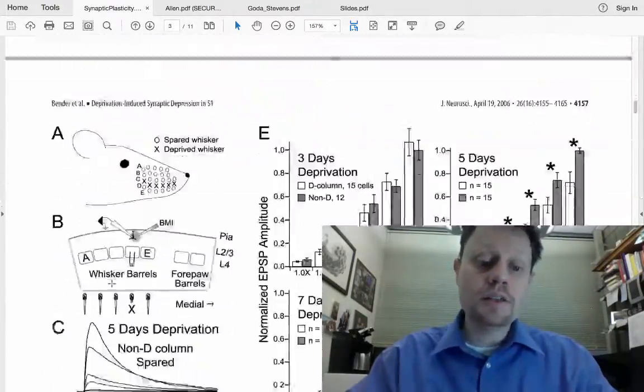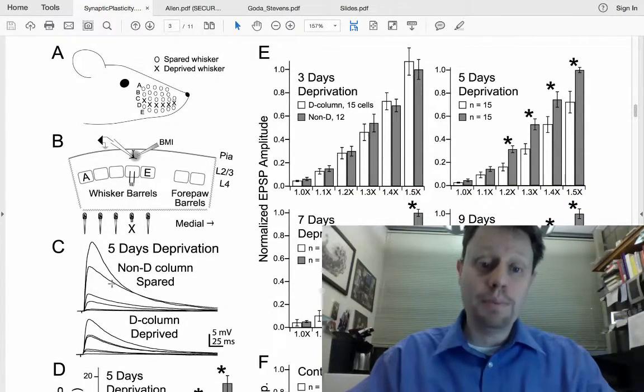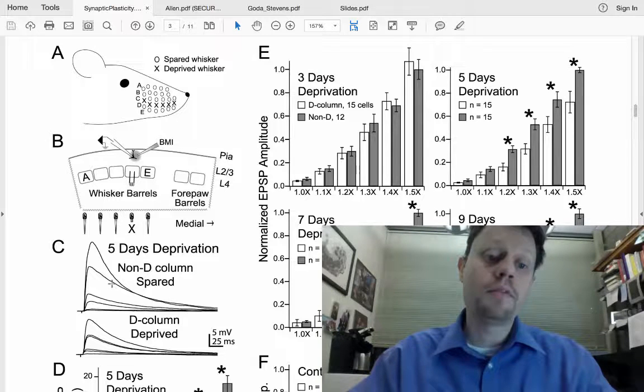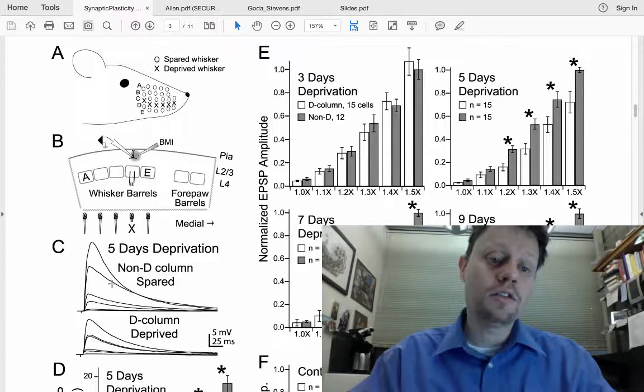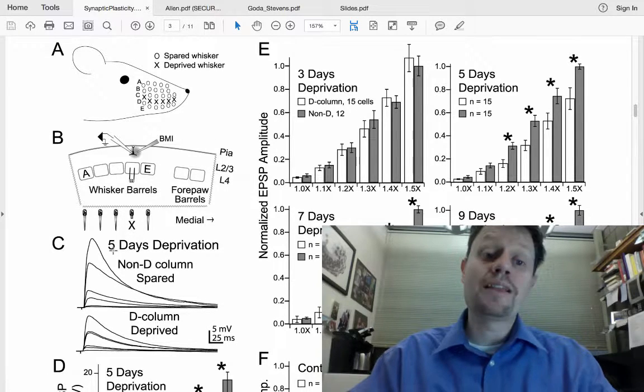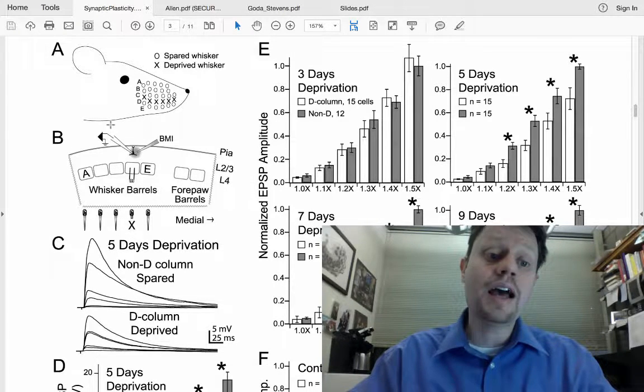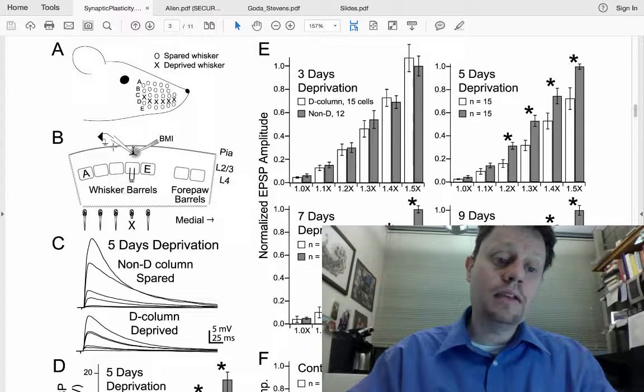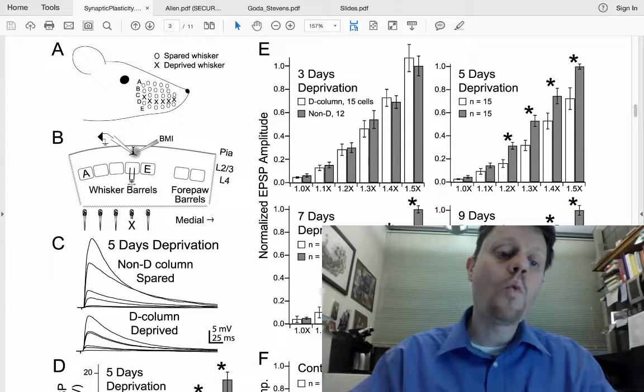In order to get into this experiment, they first explain a little bit more about their method and recapitulate some of the key results from the previous study. So here they're showing that their long-term sensory manipulation is to cut out some of the whiskers from the rat's face for a period of several days. And then the immediate thing that they are doing is recording from a single neuron in layer 2-3 with a drug present to block synaptic inhibition while stimulating electrically in layer 4.